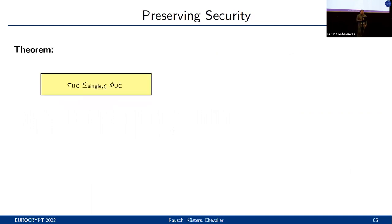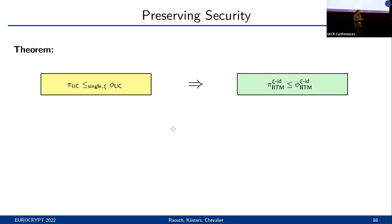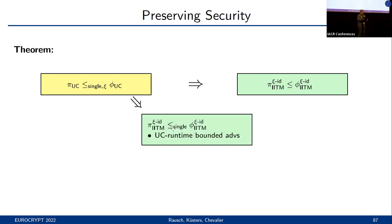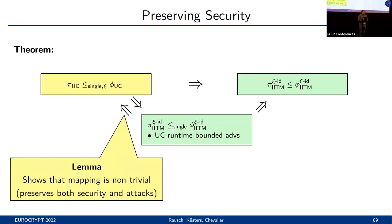Our main result then states that if we have some protocol pi that realizes a protocol phi in the UC setting, then our mapped protocol pi realizes the mapped protocol phi in the IITM setting. We show this result via several intermediate hybrid steps. Among others, we show that UC security implies single-session IITM security for the class of adversaries that adhere to the UC runtime notion. We then show with several more steps that this implies general IITM security also for adversaries that might not meet the UC runtime notion. We are further able to show that the intermediate step also implies UC security, thereby showing that our mapping is non-trivial — it doesn't just preserve security results, but also distinguishing attacks.